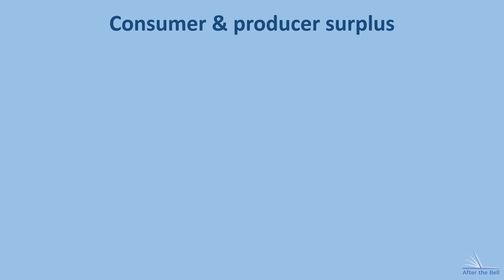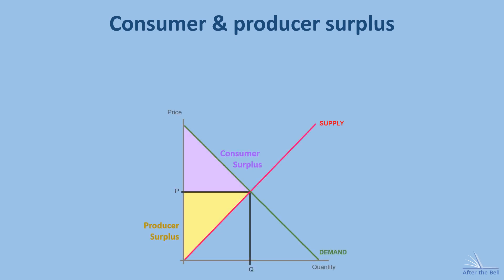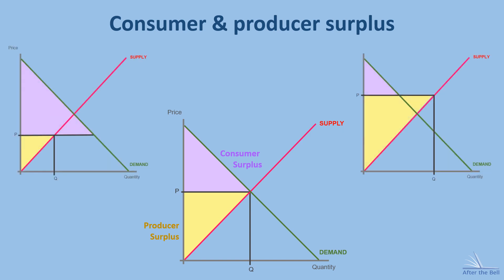Both producer and consumer surplus can be seen on the same diagram. You can see how any price change which brings about an increase in one of the areas will decrease the other one. This is the essence of consumer and producer surplus. Consumers want as low a price as possible while producers want as high a price as they can get away with. In reality, the market price will fall somewhere in between, leaving producers and consumers with some surplus each.